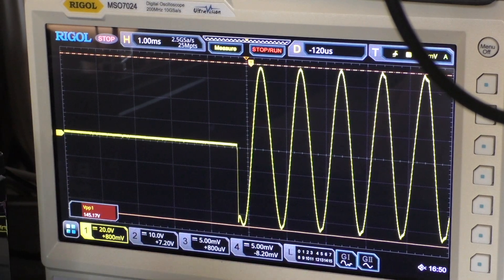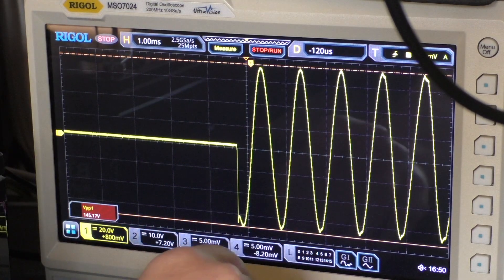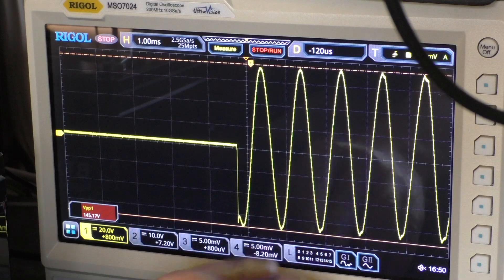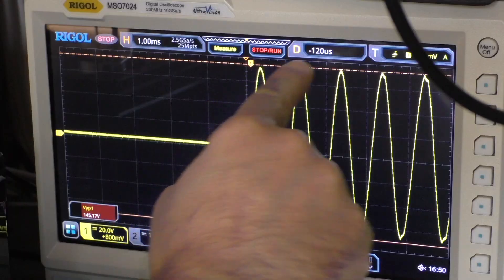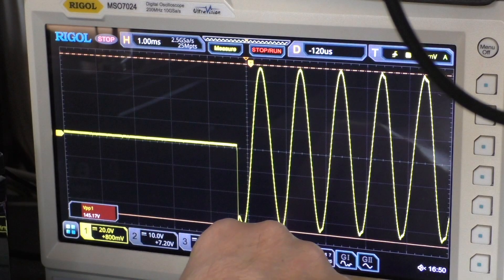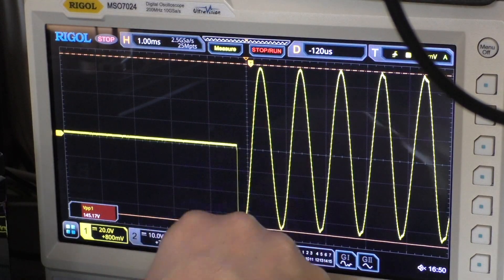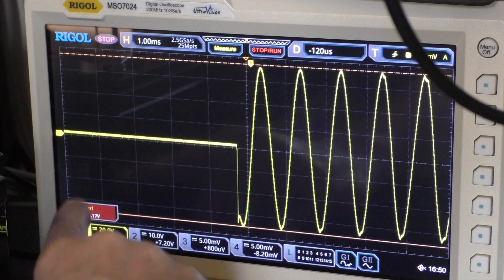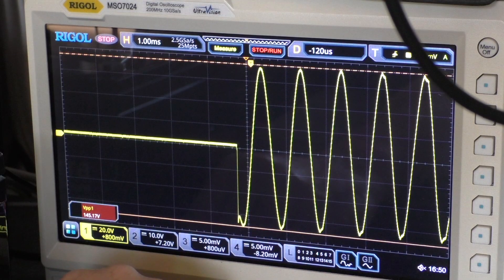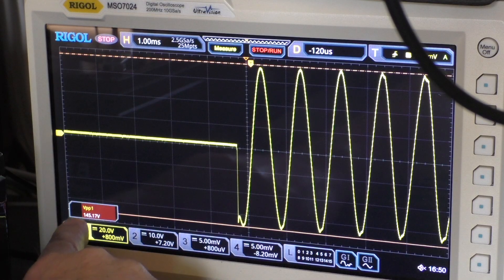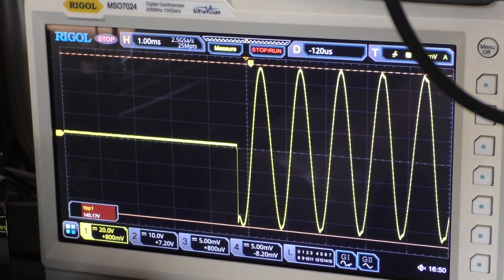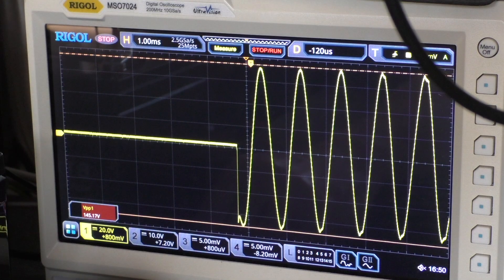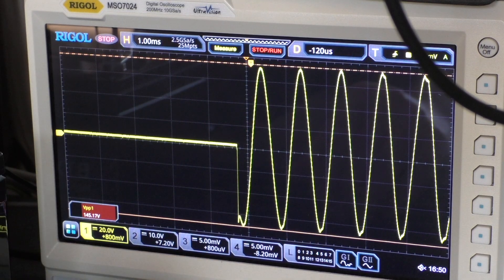And I made another measurement and I put it to the absolute maximum. You see we already have distortion here, but the first two sine waves they are almost okay. So if we take that value as our PMPO value, it's 145 volts and that corresponds to 657 watts output at 4 ohm.